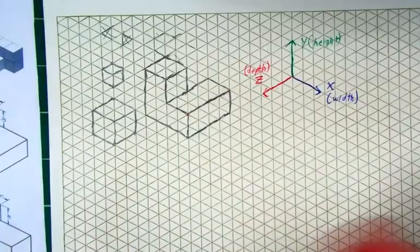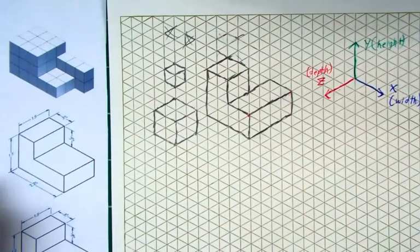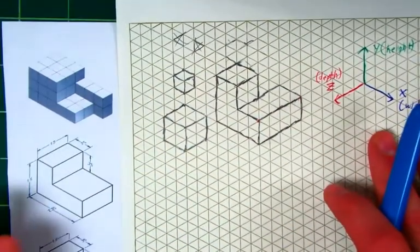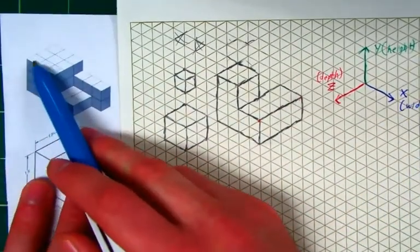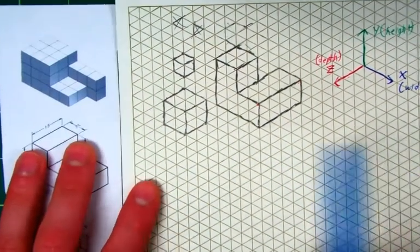Now that we've seen how this isometric paper works, let's go ahead and draw our first shape. I want to challenge you to only sketch the edges. You see these little lines in between? Those will also be shown here, but we're only going to sketch the edges of our shape.